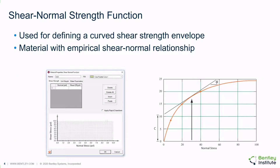The shear normal strength function can be utilized to allow the user to define a curved shear strength envelope. The relationship between normal stress and shear strength is defined by a series of points, and linear interpolation is utilized to determine the shear strengths between the entered points.